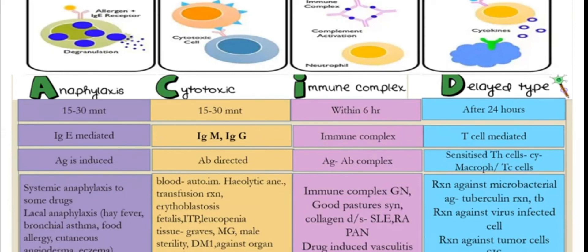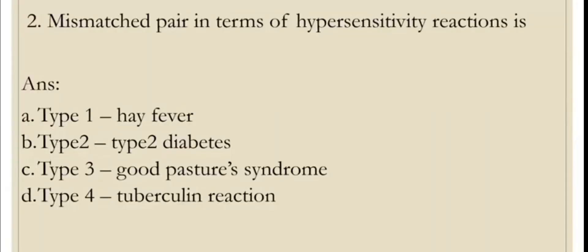Now for the question — identify the mismatched pair in terms of hypersensitivity reactions. The options are: Type 1 — hay fever (anaphylaxis), Type 2 — Type 2 diabetes, Type 3 — Goodpasture syndrome, Type 4 — tuberculin reaction.